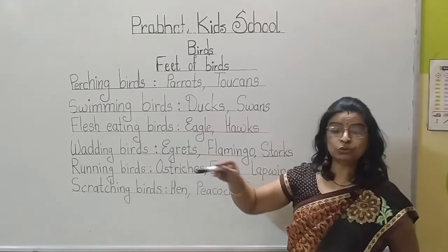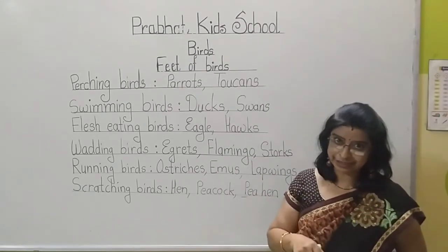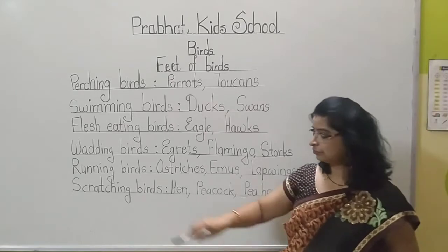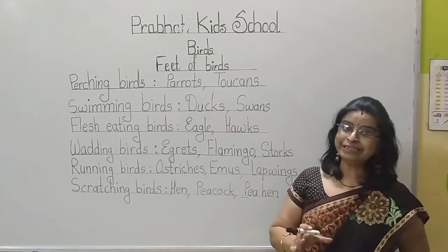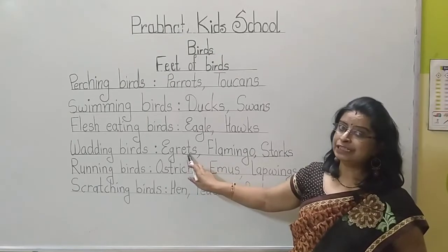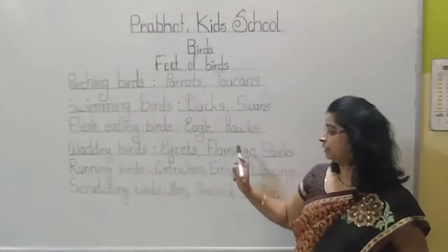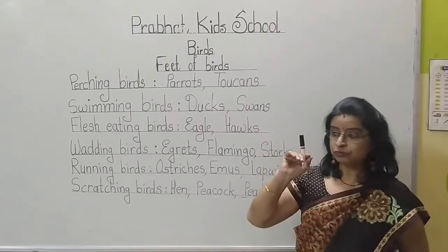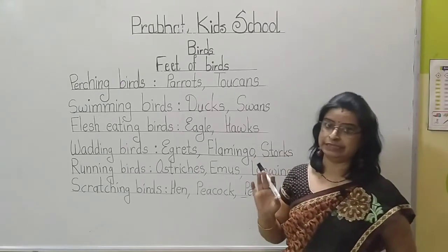Then flesh-eating birds, which kill other animals and eat their flesh — they are carnivores. Examples are eagle, hawk, vulture, and kite. Then wading birds, which feed on small insects and fish found in the water. Examples are egrets, flamingo, and stork. They can walk on or near water due to their foot structure.